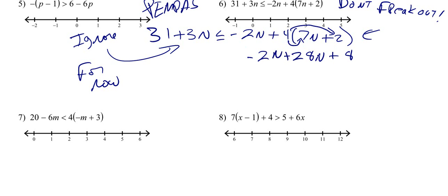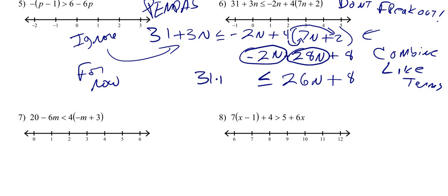Now we're just left with the 2n. Now we've worked with the parentheses, now we're going to combine like terms. You may want to circle your like terms to make sure you don't miss any. When you combine negative 2 and positive 28, you get 26n plus 8. Are there any more like terms? No. Now there's nothing we can do over here. 31 and 3n are not like terms, so we can't add or subtract them.